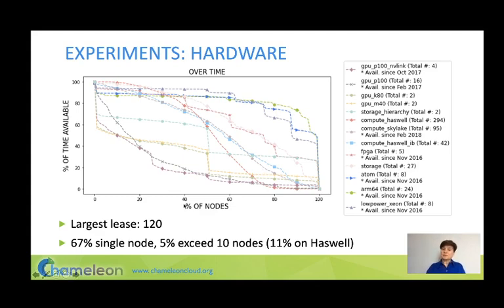The largest lease ever created in Chameleon was 120 nodes. Most users just use a single node, which means our investment in scale was quite sufficient — and as we upgraded Haswells to Skylakes, those are now smaller partitions.